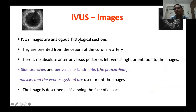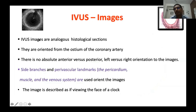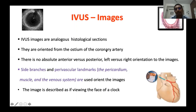Some basics about ultrasound images: IVUS images are analogous to histological sections. They produce tomographic images similar to histology — not as high resolution as histology, which has about 1 micron resolution; IVUS has about 150 to 200 micron resolution. These images are oriented from the ostium of the coronary artery. Unlike echocardiography or CT, where images are oriented from the foot end of the patient, intravascular ultrasound images are oriented as if you are sitting inside the sinus of Valsalva and viewing into the ostium of the coronary artery.